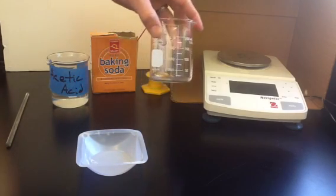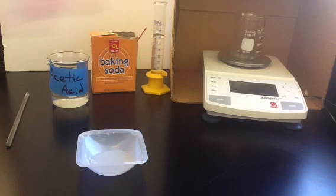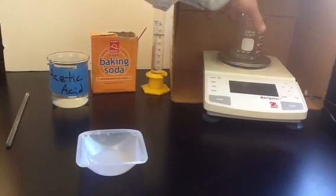We're going to start by taking an empty beaker and finding its mass. So the mass of our empty beaker is 97.43, 97.43 for the empty beaker.